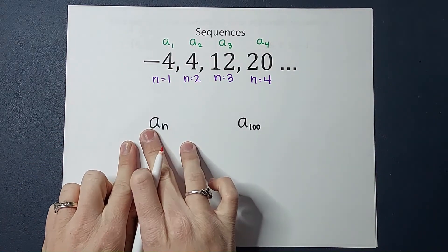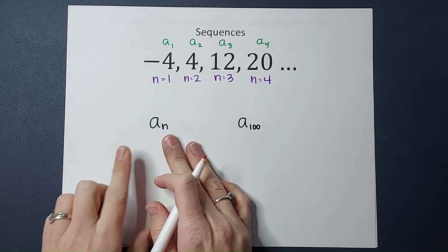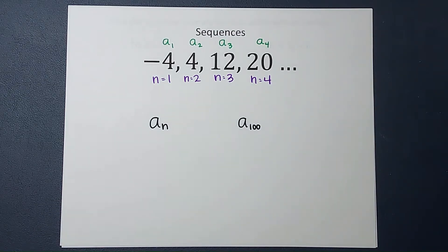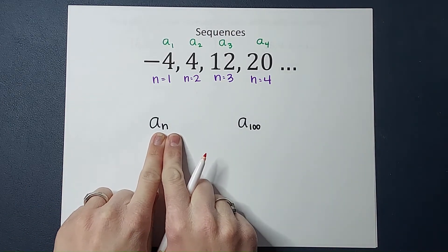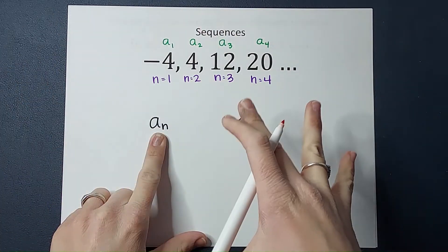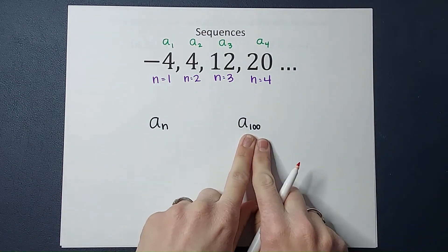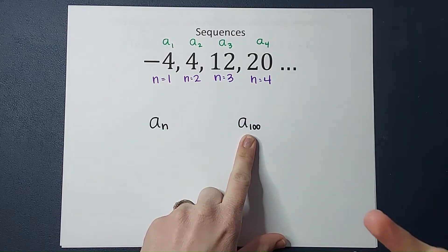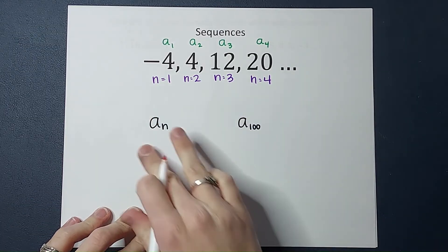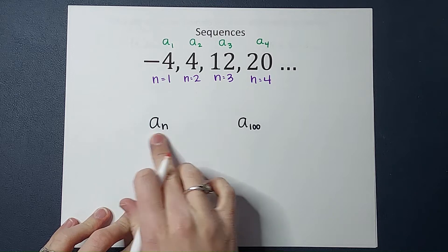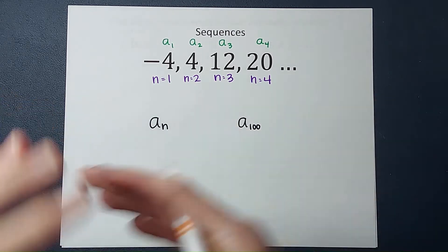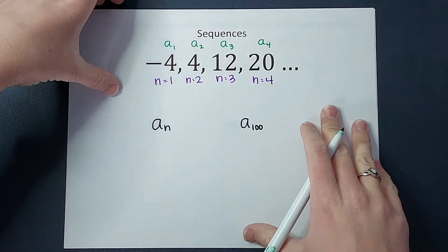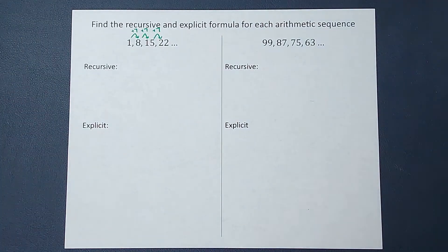You're also going to see a sub n quite frequently. What that is saying is plug in whatever number you want for n to find that in the sequence. So if I had a sub 100, I'm looking for the 100th term. As we write our formulas, we're going to leave a lot of things as a sub n so people can plug in what they want. Now that we know that, we can go ahead and apply it.